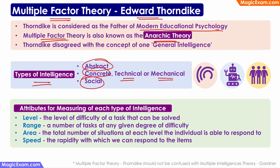If you want to measure a person's intelligence in any of these different types, you have to look at the level of difficulty of any task that this person can solve, the range — that is the number of tasks at each level of difficulty that this person can solve in that field — the area, which is the total number of situations that this person is able to respond to, and the speed at which they are able to solve that problem or respond to that situation.